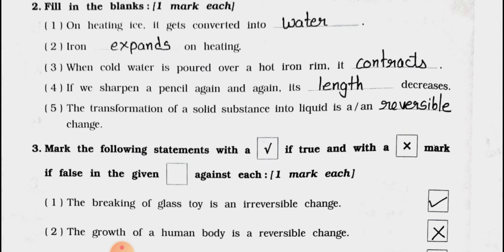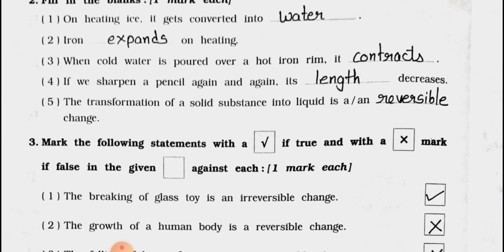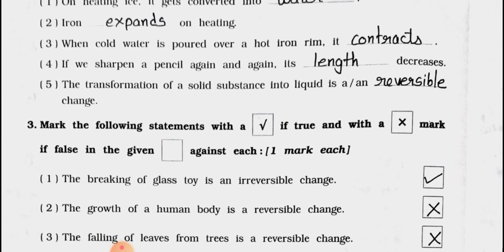Number 3: When cold water is poured over a hot iron rim, it contracts. Number 4: If we sharpen a pencil again and again, its length decreases. Number 5: The transformation of a solid substance into liquid is a reversible change.